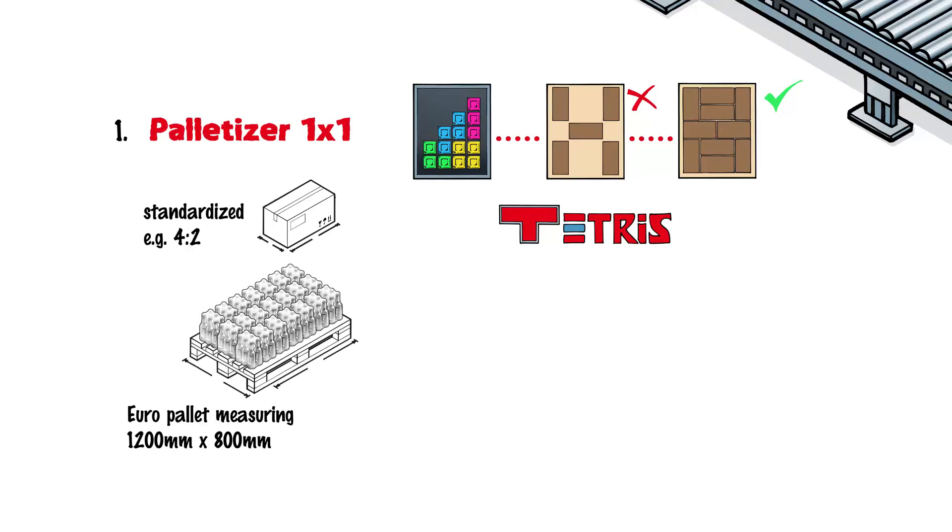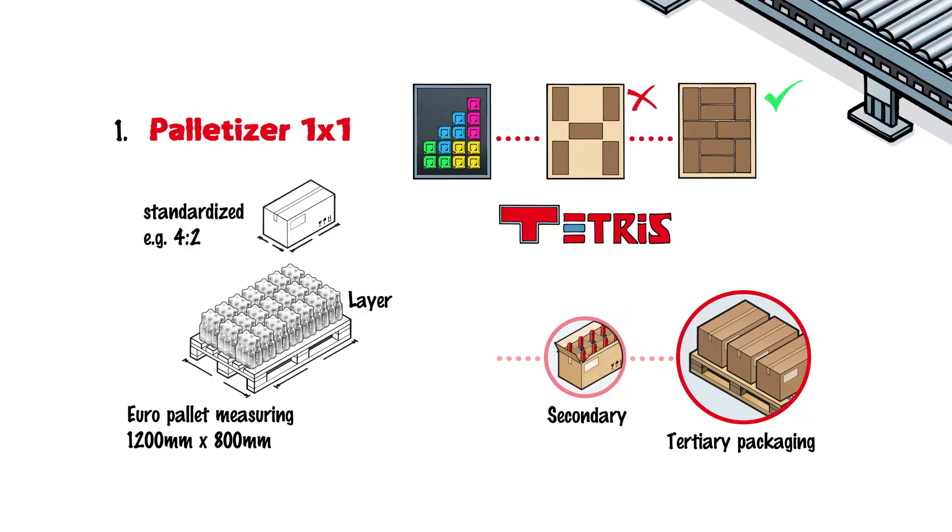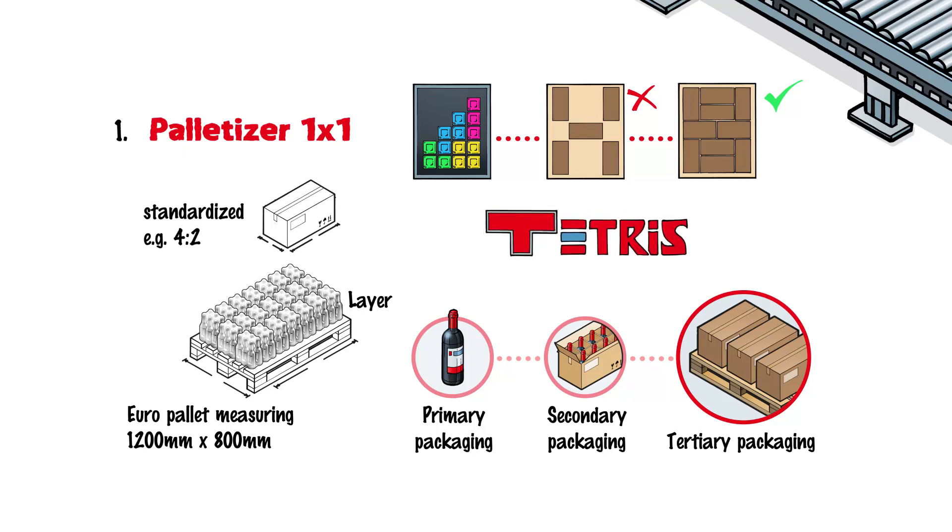Goods are stacked on pallets in layers. Palletizing is part of packaging technology, with the loaded pallet forming the tertiary packaging. Getting a good end result requires efficient alignment and positioning, just like in Tetris.